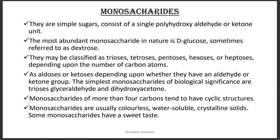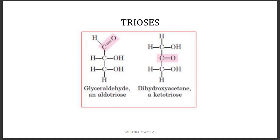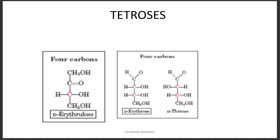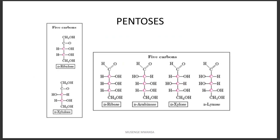The simplest monosaccharide we have is a triose, which can either be glyceraldehyde or dihydroxyacetone. Glyceraldehyde is an aldehyde, while dihydroxyacetone is a ketone. We also have tetroses, which can also be aldehydes or ketones.